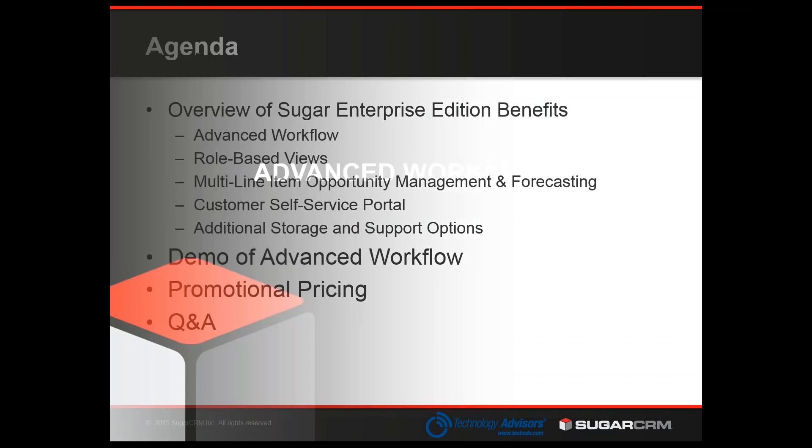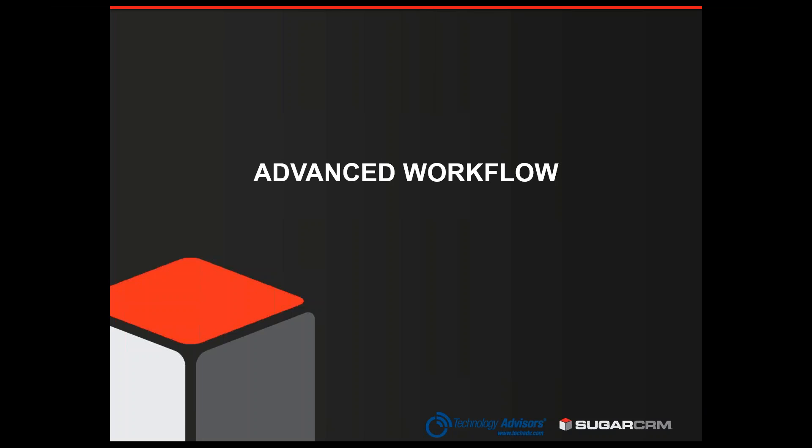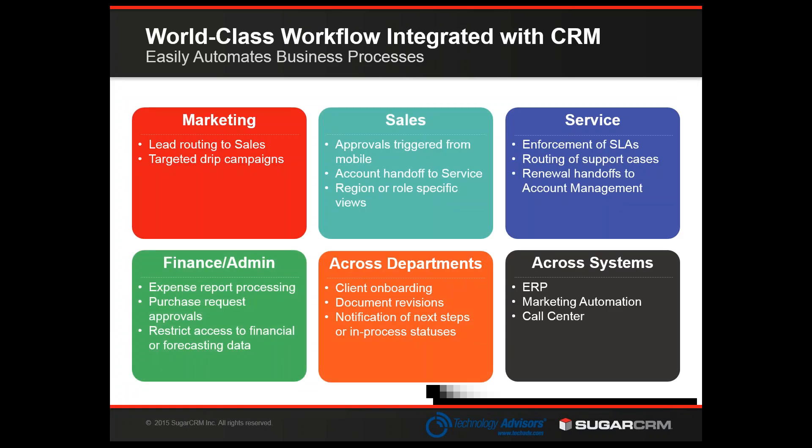Thanks, Janine. So as Janine said, we're going to talk a little bit about the advantages of Sugar Enterprise when compared to Sugar Professional. One of the key advantages — a new feature that Sugar has just released in version 7.6 — is called Advanced Workflow. Advanced Workflow is really a business process automation tool, and there are thousands of different things you can do with it. This is a tool that can handle complex processes across your business, across different departments, whether that's sales, marketing, or service, and automating those processes within Sugar's CRM.